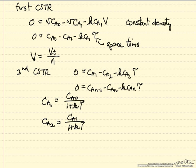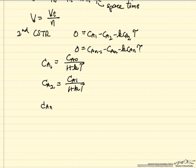This means CaN, in general, is Ca0 divided by 1 plus K tau to the nth power. This is, of course, for a first order reaction.